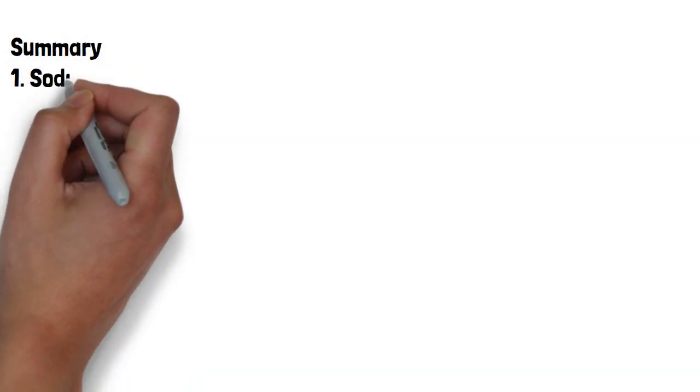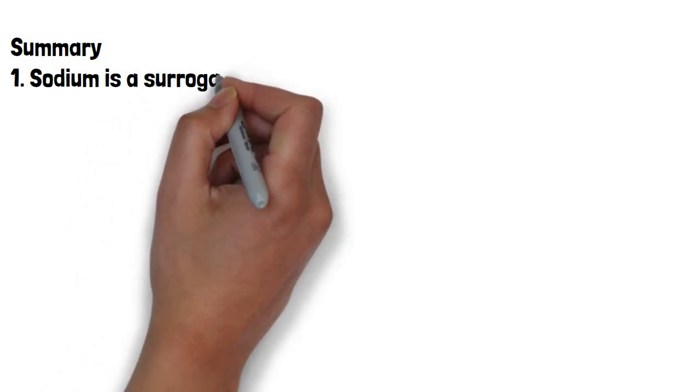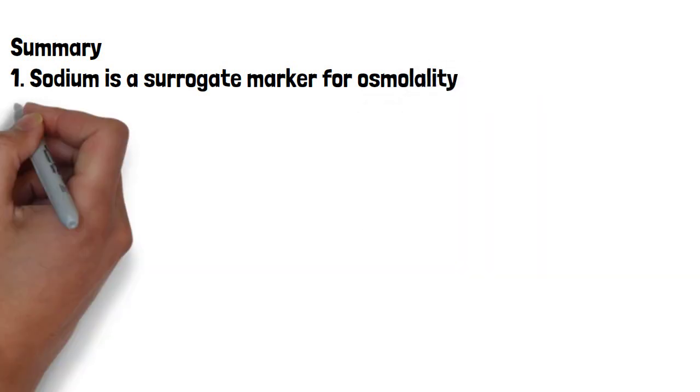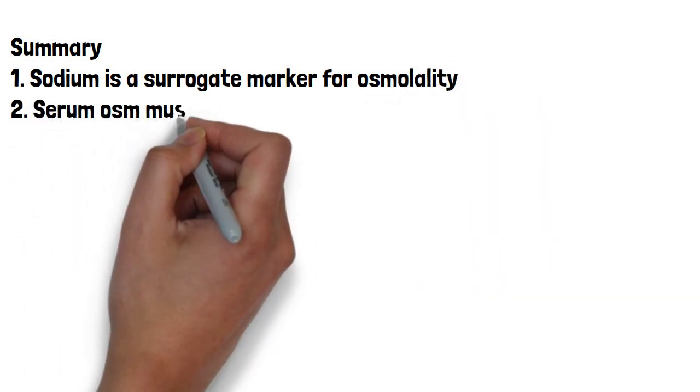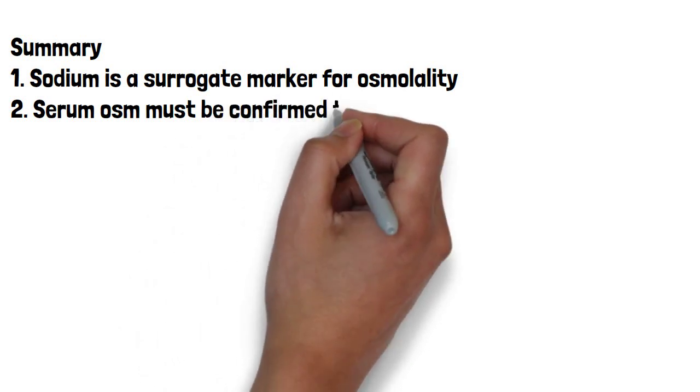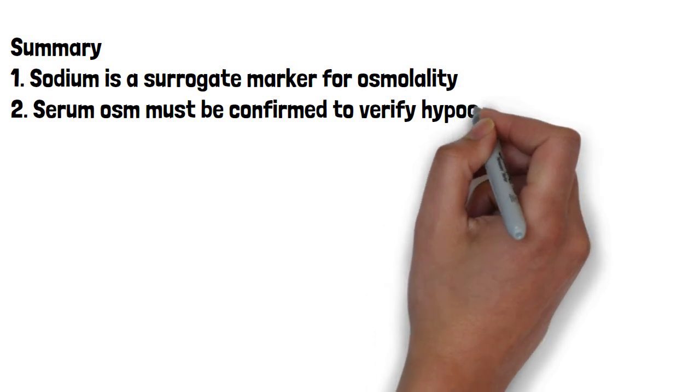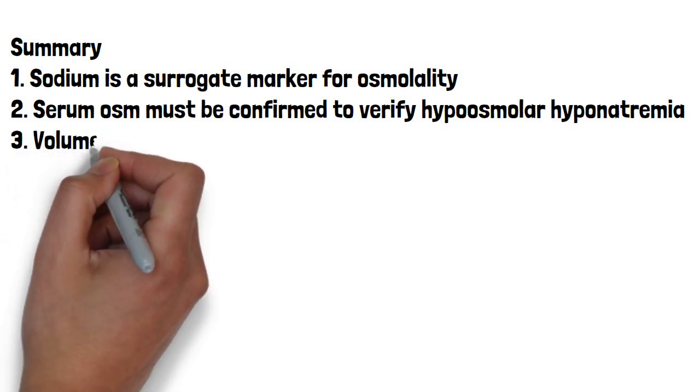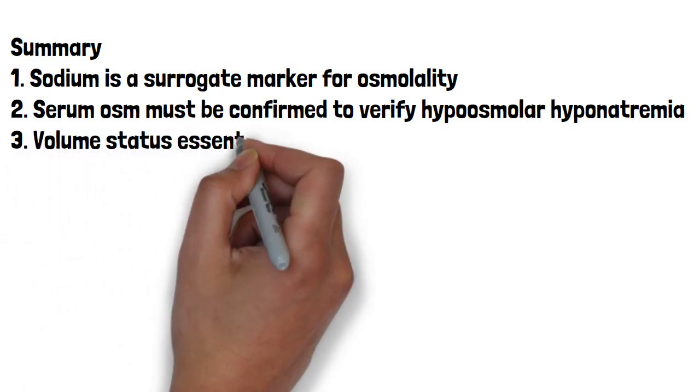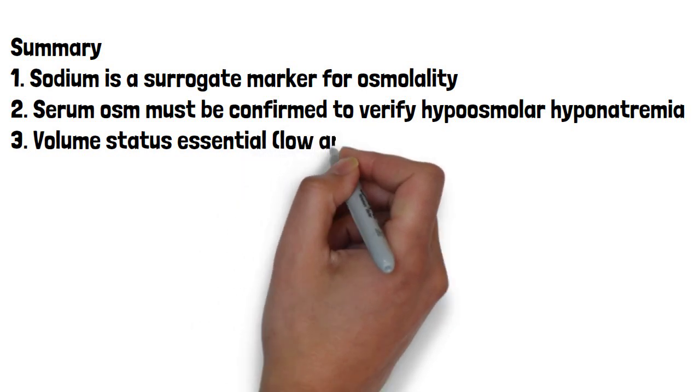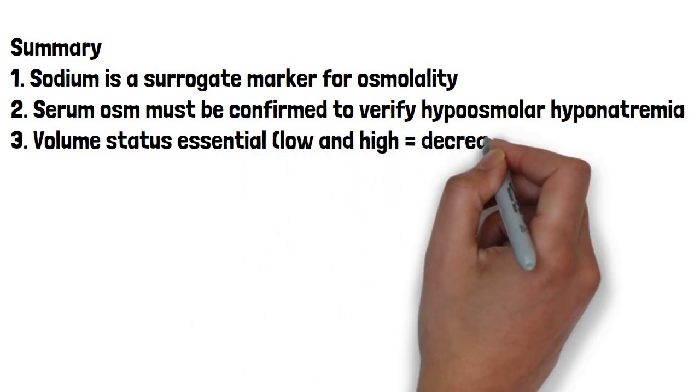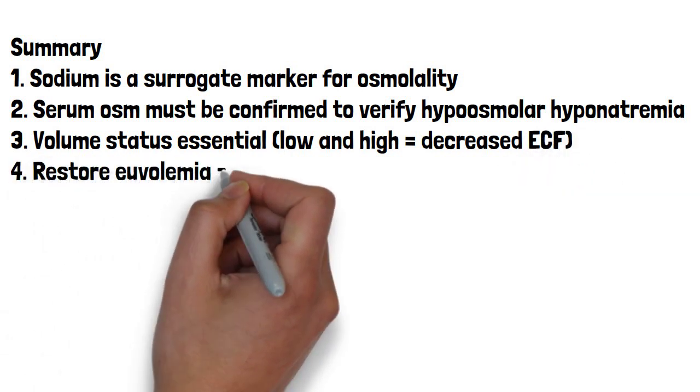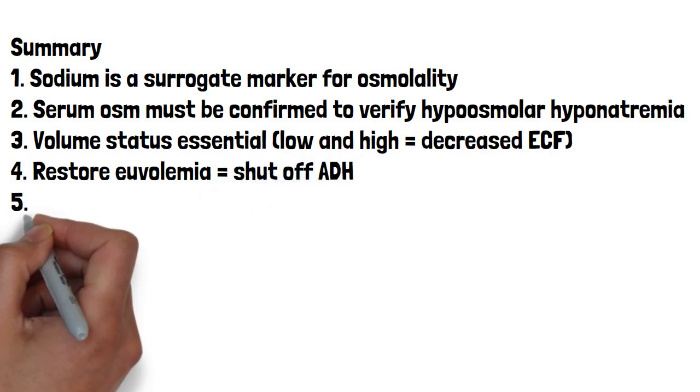So in summary, what we need to remember is that sodium really is a surrogate marker of your serum osmolality. That's why it's so important. That's why when it's low, we assume osmolality is low. But we need to confirm that that osmolarity is actually low. So you have to check the lab test, serum osm, to verify that it is actually low and you're dealing with true hyponatremia. Once you've done that and you've verified that you have true hyponatremia, you have to check someone's volume status, knowing that in both low and high volume states, you have decreased effective circulating volume and you have to restore euvolemia in order to turn off ADH and then shut off that waterfall, so to speak.